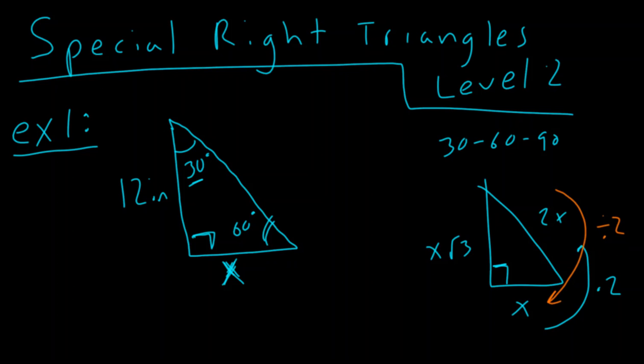When going from the short side to the third side, you're multiplying by the square root of 3, and conversely, when going from the third side to the short side, you are dividing by the square root of 3. Okay, so this is where we kind of run into a problem here.